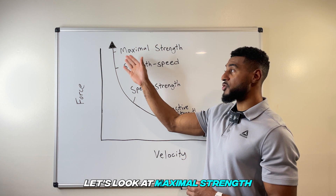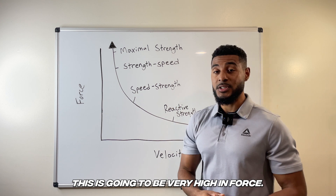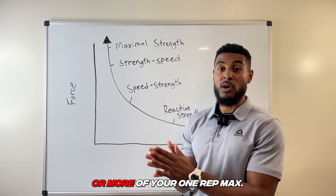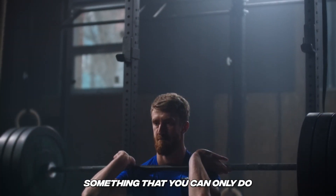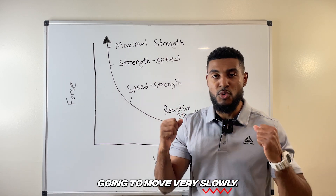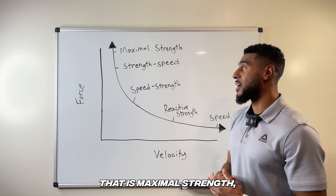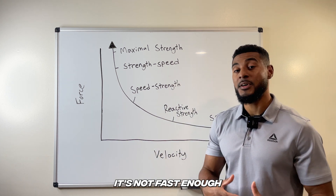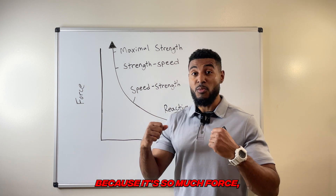First, let's look at maximal strength at the far left of the curve. This is going to be very high in force — think about things where you're lifting about 90% or more of your one rep max. If you're squatting a very heavy weight, something you can only do once or twice, that is considered maximal strength. It's going to move very slowly — those grinding reps where you can barely move. That is maximal strength, even up to your five rep max.